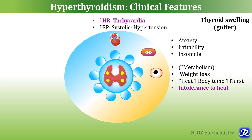Overall cell metabolism rate is increased in hyperthyroidism because thyroid hormone increases basal metabolism. This leads to increased glycolysis, lipolysis, and glycogenolysis, resulting in weight loss. BMR is increased, so there is increased heat production, higher body temperature, more thirst, and intolerance to heat. These are characteristic features of hyperthyroidism — weight loss and heat intolerance.